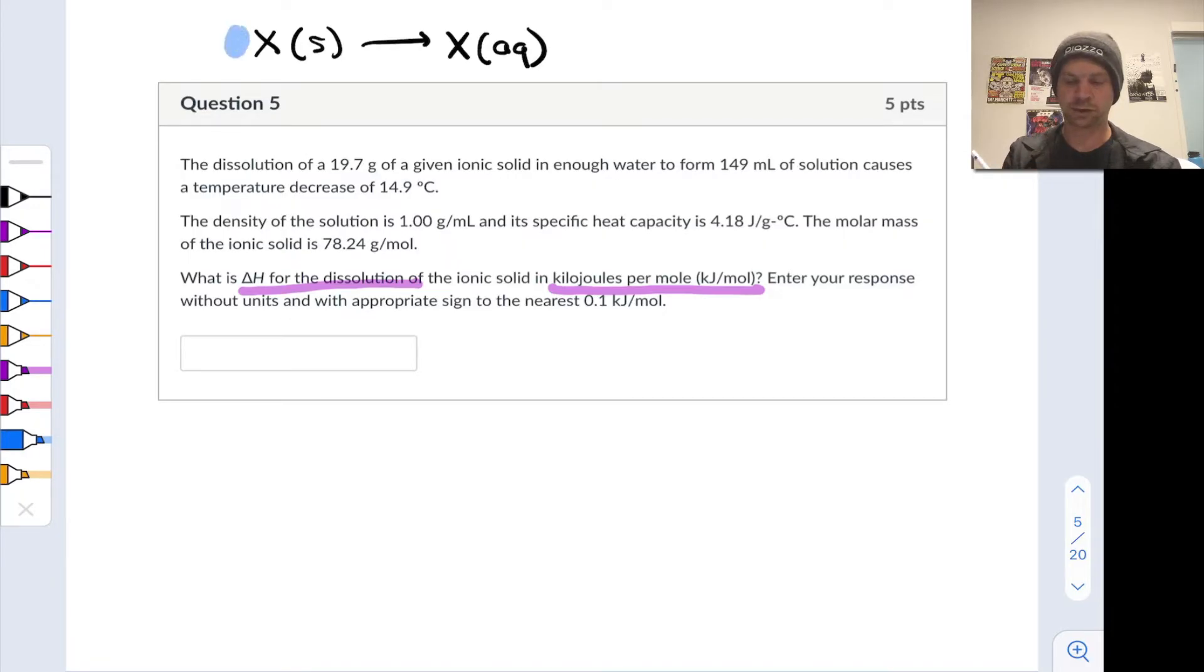This may seem like a very straightforward chemical equation, but I like to write it down to remind us that we want to know the enthalpy change when one mole of X is dissolved in water. We have all the information we need to find this. We've got the volume of solution formed along with its density and specific heat, as well as the temperature change.